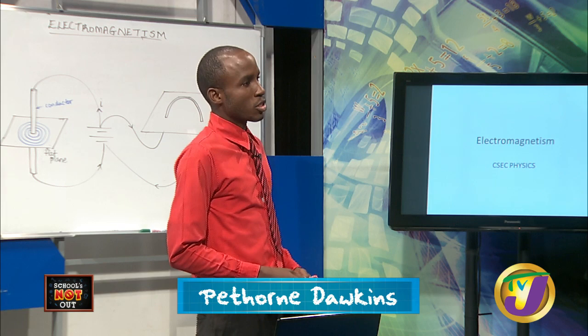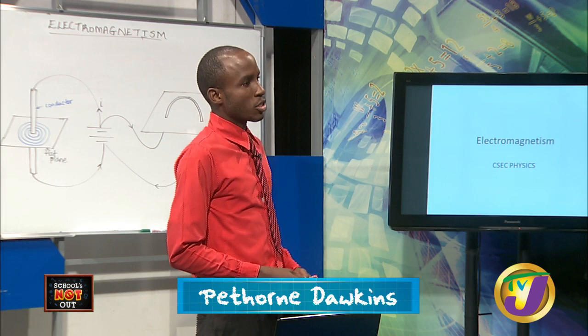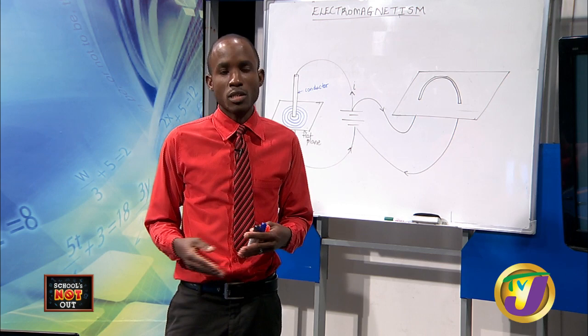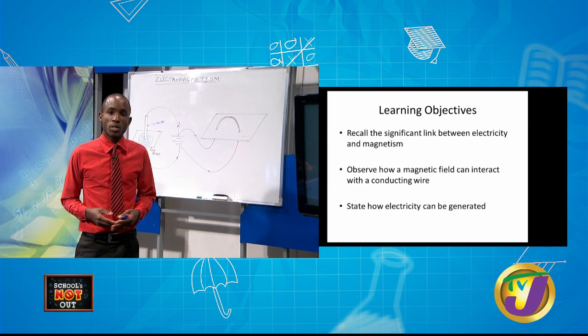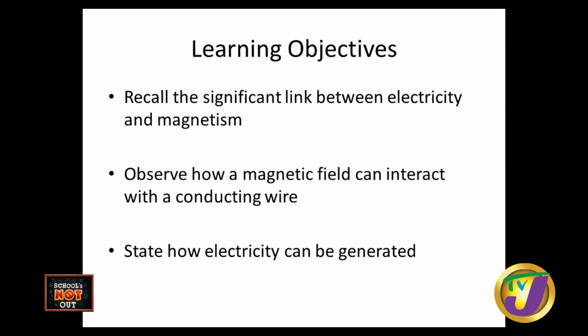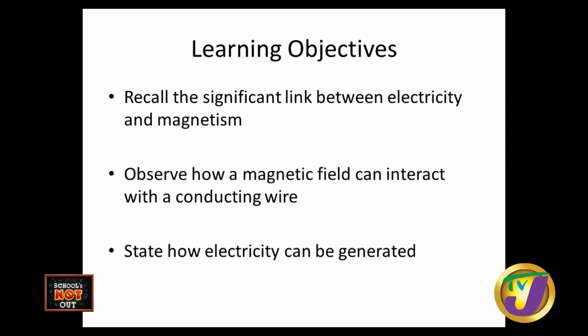I am Pithorin Dawkins. We're going to look at electromagnetism — a combination of two words: electricity and magnetism. We'll look at the close relationship between electricity and magnetism. In this lesson, we have certain objectives: we'd want to recall the link between electricity and magnetism, look at how a magnetic field can interact with a conducting wire, and state how electricity can be generated from a magnetic field.